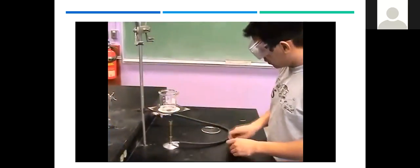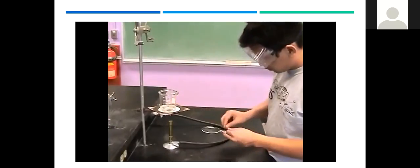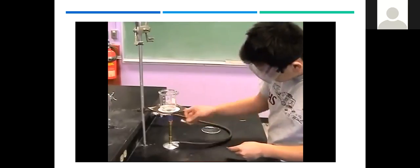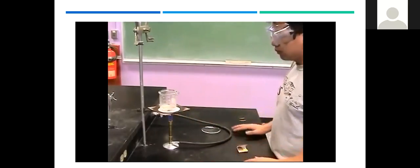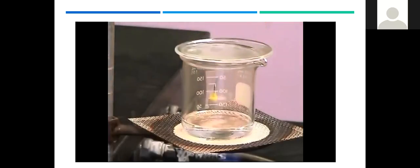An open flame should never be present in the laboratory when flammable liquids are nearby. Such liquids can easily catch fire or even explode. A moment's carelessness is all that is required for a fire to start. If the fire should start in a glass container, such as a beaker, put a solid object over the opening of the beaker. The fire will be smothered.